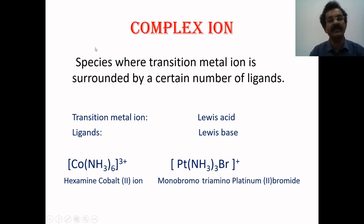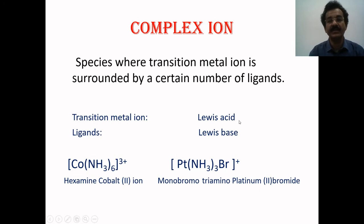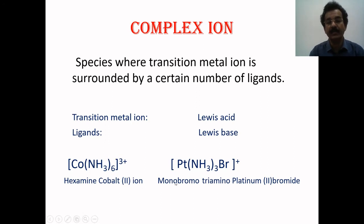Regarding complex ions: a complex ion is one where the transition metal ion is surrounded by a certain number of ligands. The transition metal ion acts as a Lewis acid because it is electron deficient, and the ligand acts as a Lewis base because it contains a lone pair of electrons that can be easily donated to the central metal ion. For example, cobalt ion is the central metal ion surrounded by 6 ligands, and monobromo triamino platinum-2 bromide.